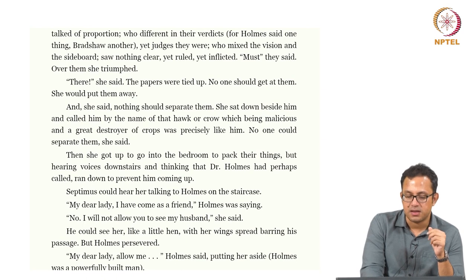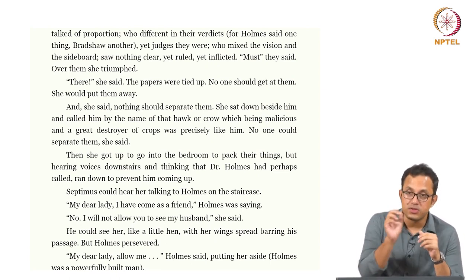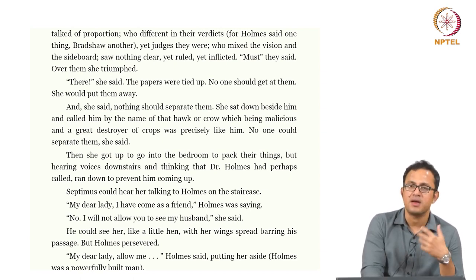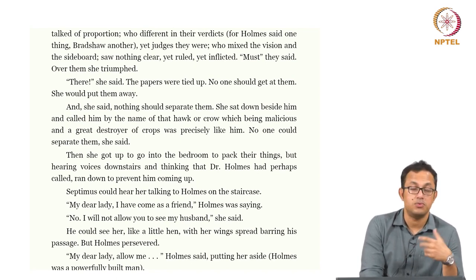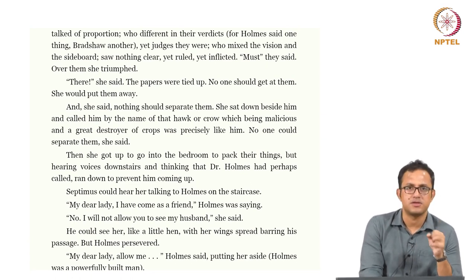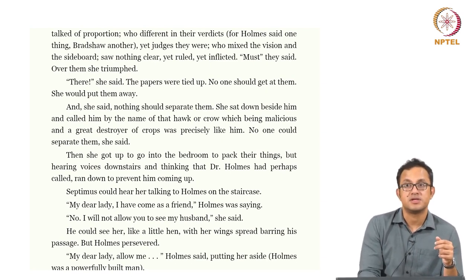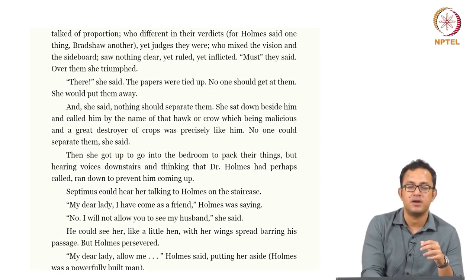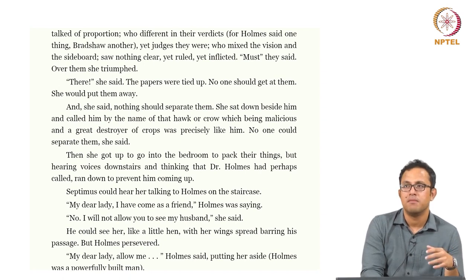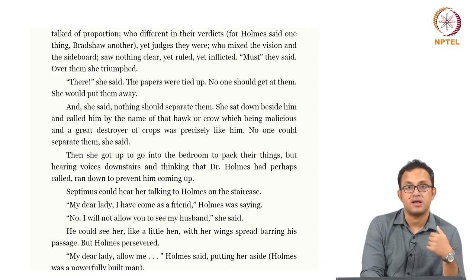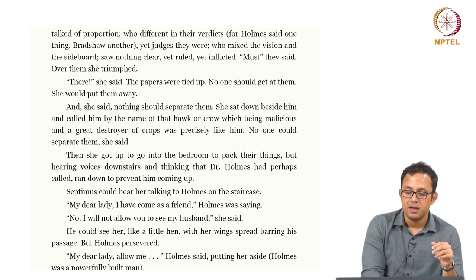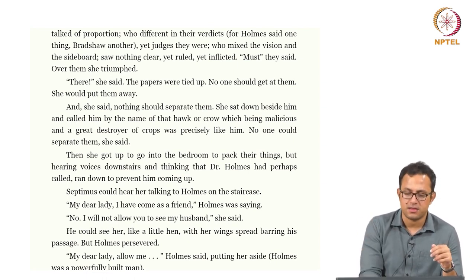Septimus could hear Rezia talking to Holmes on the staircase. 'My dear lady, I have come as a friend,' Holmes was saying. 'No, I will not allow you to see my husband,' she said. There is a sinister quality about that statement — 'I come as a friend' — implying non-friendly, perhaps hostile motives. This is almost like a Harold Pinter play where a mysterious agent of the state comes to take away someone dysfunctional — like the birthday party, where a washed-out pianist is taken away by two mysterious people. Holmes comes very sinisterly and Rezia does her best to stop him, while Septimus overhears everything from upstairs.